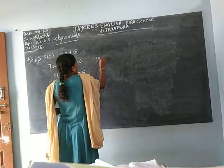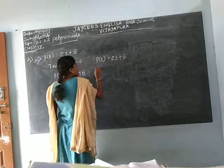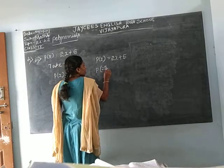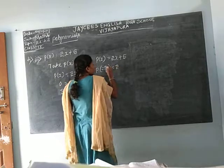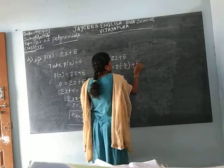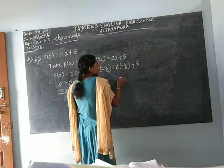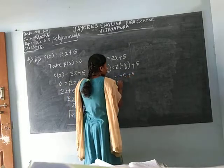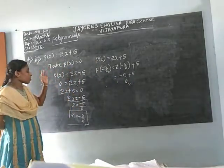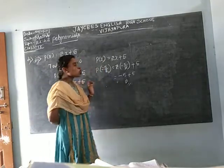The problem is P(x) = 2x + 5. We already found x = -5/2. Now we verify: 2 × (-5/2) + 5. The 2 in the numerator and denominator cancel, leaving -5 + 5 = 0. Final answer is 0, so -5/2 is the zero of this polynomial. You understood? Go to next problem.